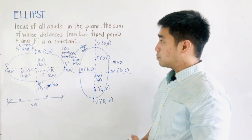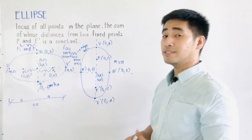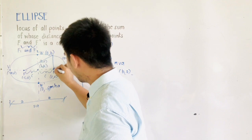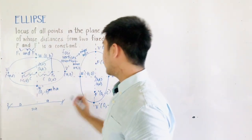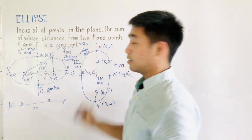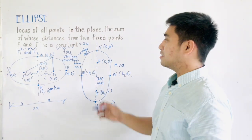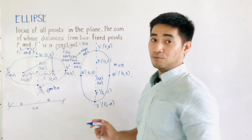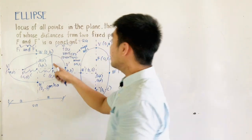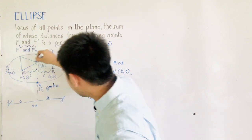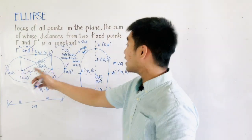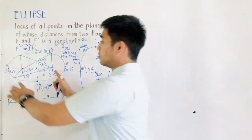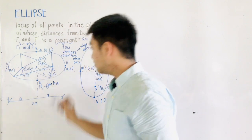Looking again at the definition: the ellipse is the locus of all points in the plane, the sum of whose distances from two fixed points F and F' is a constant — and that constant is always equal to 2A. So for any point on the ellipse, the sum of its distances to the two foci is 2A. This holds for any point you pick on the ellipse.